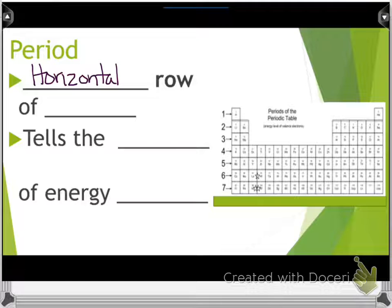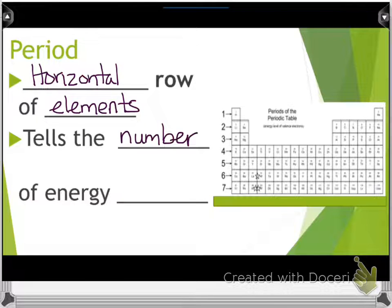A period is the horizontal row of elements. So on that periodic table right there on the right, the numbers are there for you. I want you to go on to your fun sheet on the front side and write those numbers down. It tells the number of energy levels.